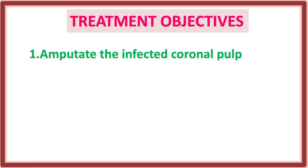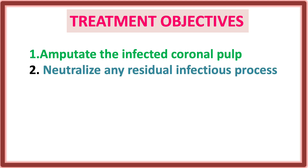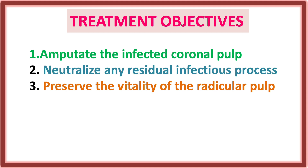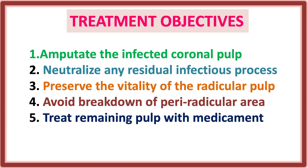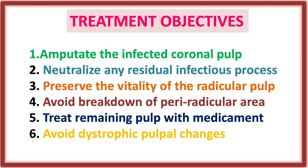The treatment objectives are: to amputate the infected coronal pulp, neutralize any residual infectious process, preserve the vitality of the radicular pulp, avoid breakdown of the periradicular area, treat the remaining pulp with medicament, and avoid dystrophic pulpal changes.